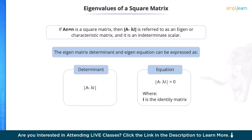Eigenvalues of a square matrix. If A is an N×N square matrix, then A − λI is referred to as the eigen or characteristic matrix, where λ is an indeterminate scalar and I stands for an identity matrix. The eigen matrix determinant and eigen equation can be expressed as |A − λI| = 0.